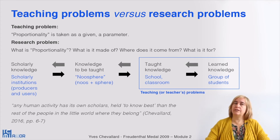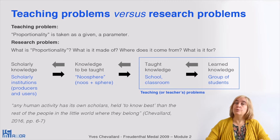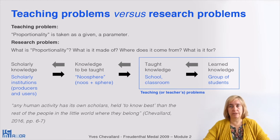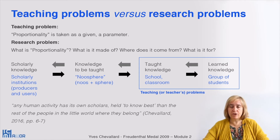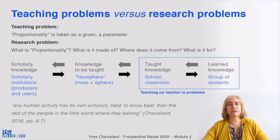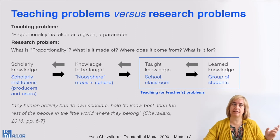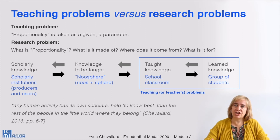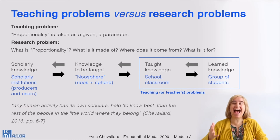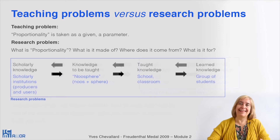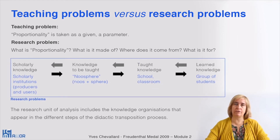In the case of mathematics, scholars can be, for instance, mathematicians — those who produce mathematical knowledge — but also those who use mathematical knowledge. As you can read in the lecture's notes, scholars are those who provide the epistemological legitimacy of the knowledge that is taught at school. There is a strong assumption here: what is taught at school generally comes from the outside, from another institution — the scholarly institution — that legitimates and guarantees the authenticity of the knowledge taught.